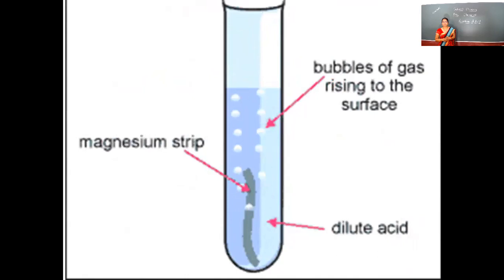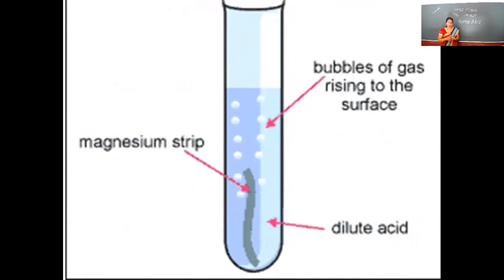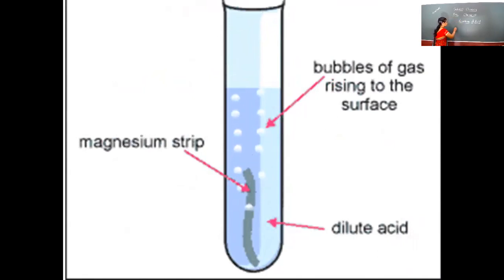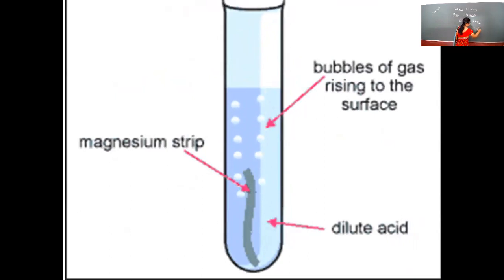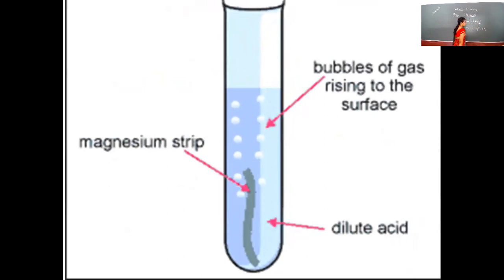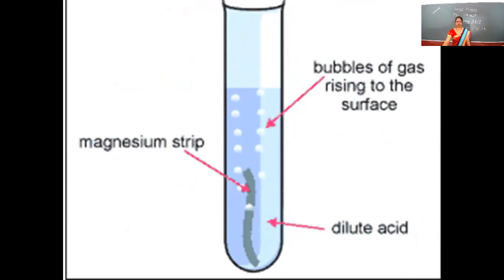Here, see the reaction of magnesium with dilute hydrochloric acid. When magnesium reacts with dilute hydrochloric acid, we can observe the evolution of hydrogen gas — bubbles of hydrogen gas are produced.